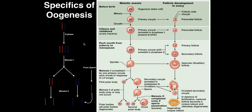Welcome back to Genetics on Catalyst University. My name is Kevin Tokoff. Please make sure to like this video and subscribe to the channel for future videos and notifications. In this video, we're going to talk about the specifics of oogenesis, which is the process by which females manufacture what's called an ovum — what we typically refer to as the egg. In a separate video, we'll talk about spermatogenesis, which occurs in males, but that is a far simpler process. Oogenesis is much more complicated.